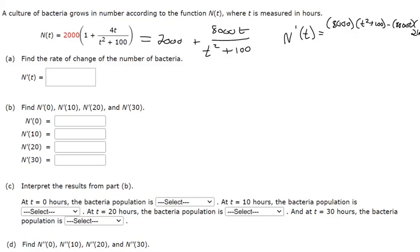The derivative of t squared plus 100 is 2t, so that's 2t over there. And it's all over the bottom function squared, so t squared plus 100. If we can clean that up, we can distribute that 8000. So that's 8000 t squared plus 800,000.